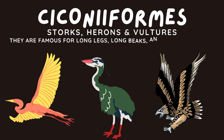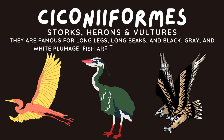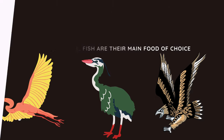Ciconiiformes. These kinds of birds include storks, herons, and vultures. They are famous for long legs, long beaks, and black, gray, and white plumage. Fish are their main food of choice.